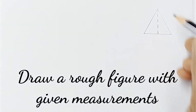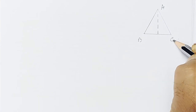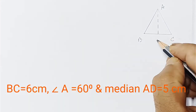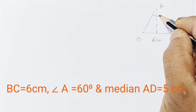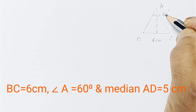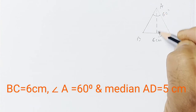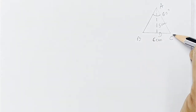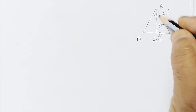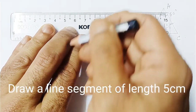As given in the question, we have to draw triangle ABC. Suppose this point is A, this point is B, and this point is C, with BC equal to 6 centimeters — so the base is 6 centimeters. Angle A is given as 60 degrees, and the median AD, where D is the midpoint, is 5 centimeters.